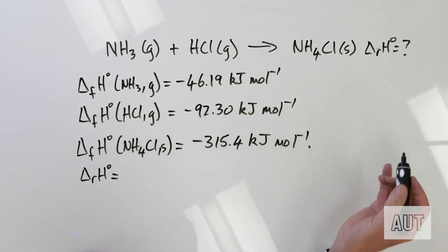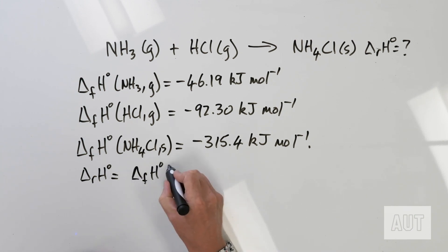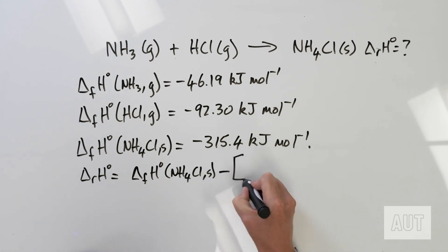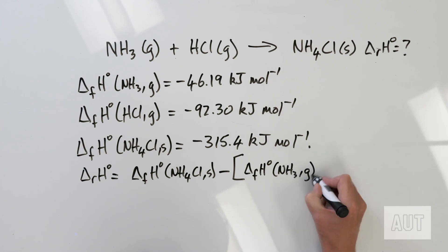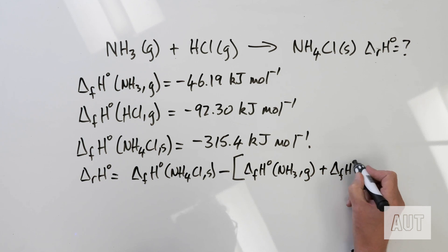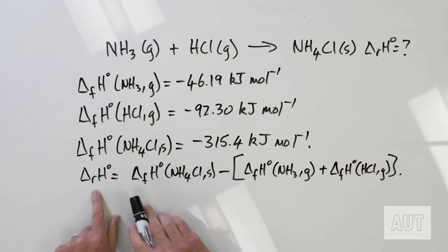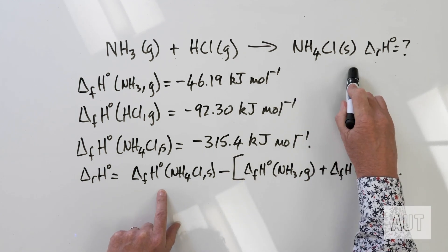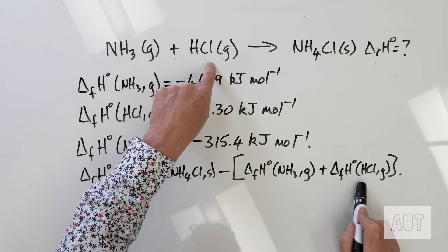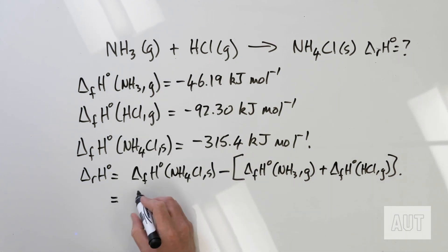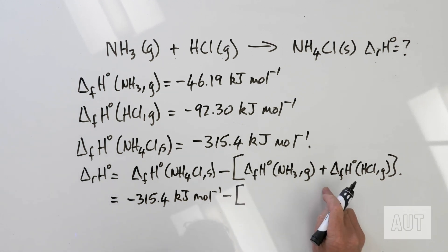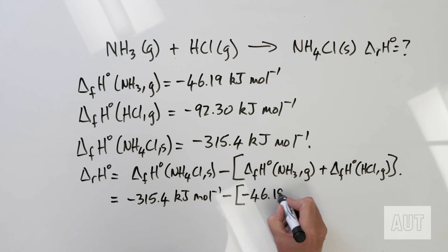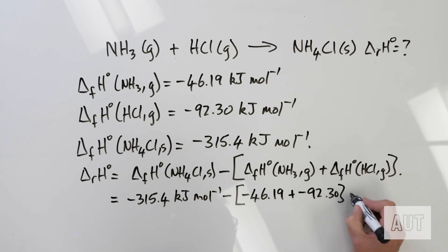For this particular reaction, delta RH standard is going to be right-hand side minus the left-hand side. So it's delta FH standard of NH4Cl solid, minus the sum of delta FH standard of NH3 gas plus delta FH standard of HCl gas. That's simply standard enthalpies of formation of the right-hand side minus the sum of the standard enthalpies of formation on the left-hand side. So that gives us minus 315.4 kJ per mole, minus the sum of minus 46.19 plus minus 92.30 kJ per mole.